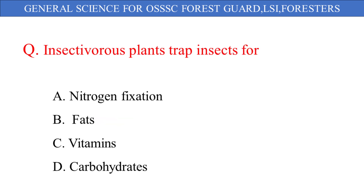Insectivorous plants trap insects for: A. Nitrogen fixation, B. Fats, C. Vitamins, D. Carbohydrates. And the correct answer is option A: Nitrogen fixation.